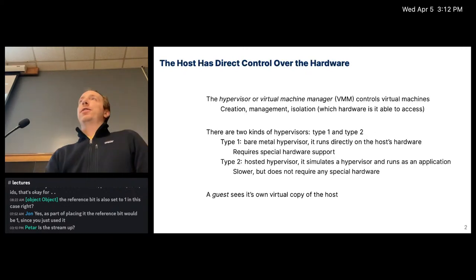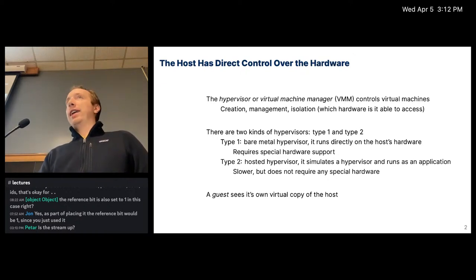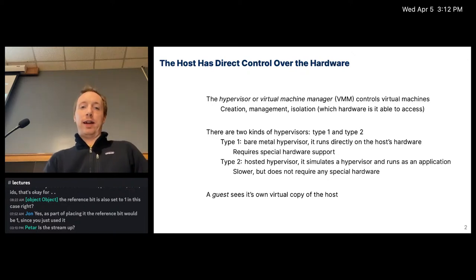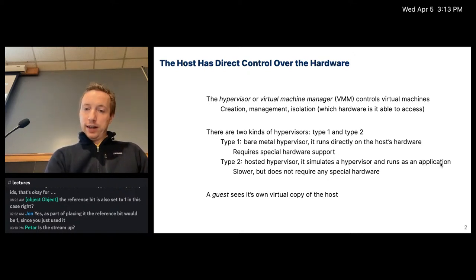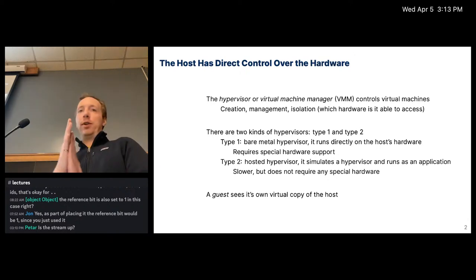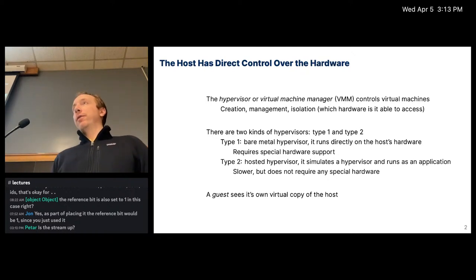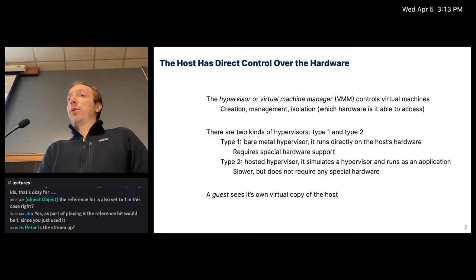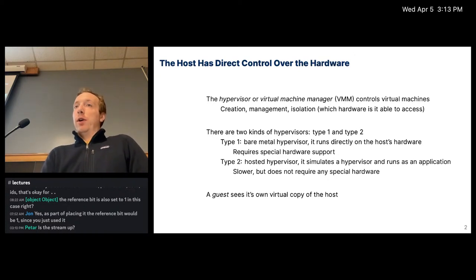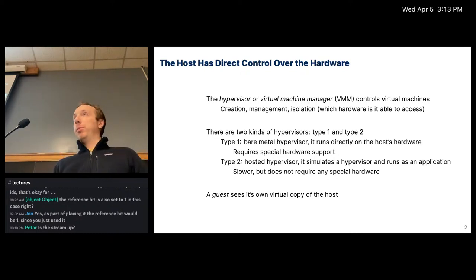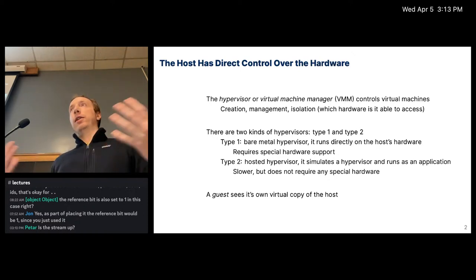There's some terminology when we talk about virtual machines. The first is the host, which is the hardware that actually controls everything. The hypervisor, sometimes called the virtual machine manager, is the piece of software that controls virtual machines. It controls things like creating virtual machines, managing them, what resources they get, and what hardware should be protected from one virtual machine.